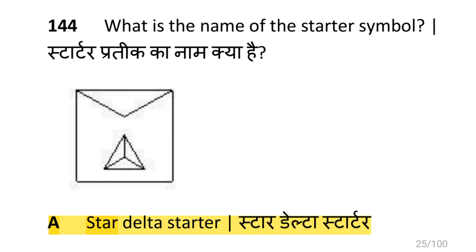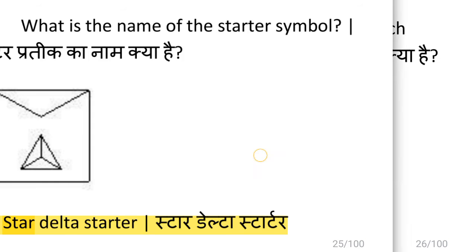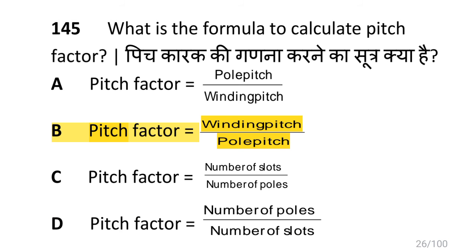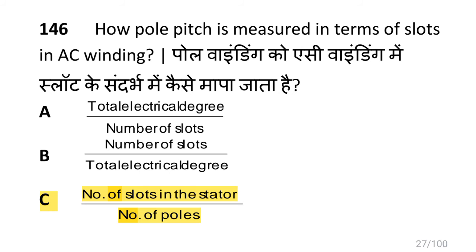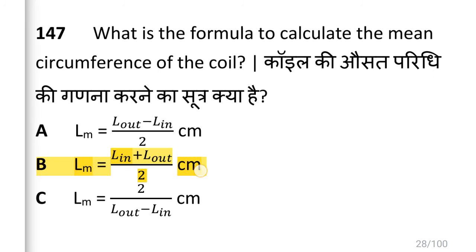The starter symbol shown is the star delta starter. The formula to calculate pitch factor is: pitch factor equals winding pitch divided by pole pitch. Pole pitch is measured in terms of slots as: number of slots in the stator divided by number of poles.